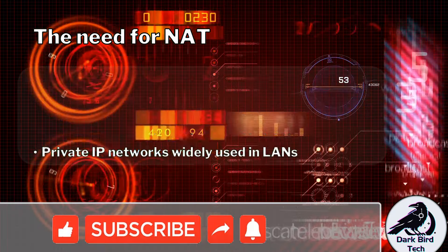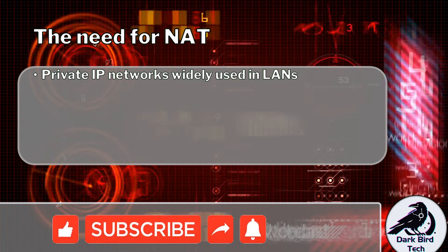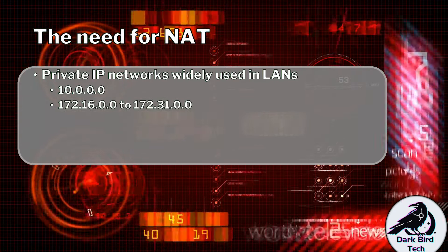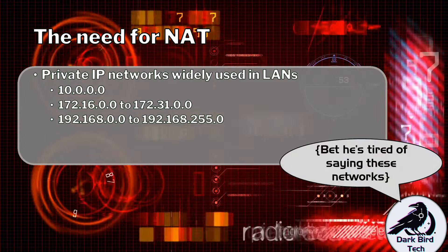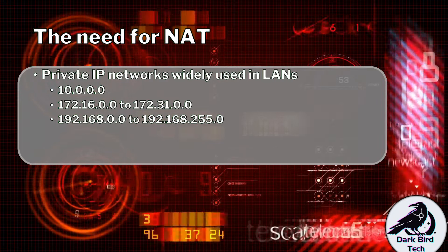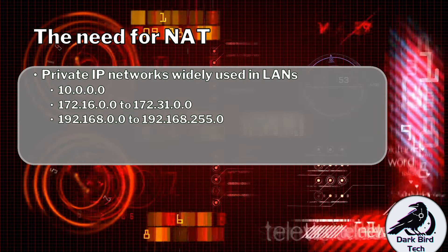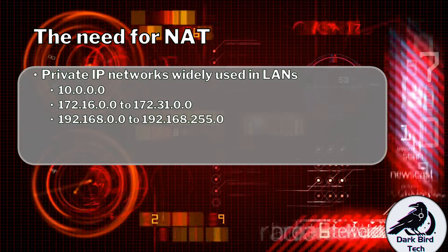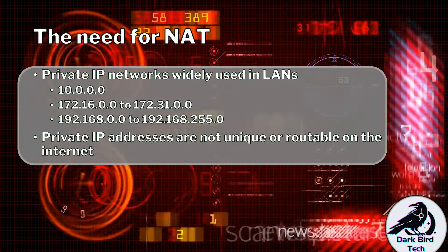The reason why we need NAT is because we tend to use private IP networks in our LANs — networks like the 10 network, the 172.16 through to 172.31, and the 192.168.0 through to 192.168.255 networks. These networks are private, which means anybody and everybody can use them, as we discussed in a previous video on IPv4. The problem with those private addresses is that they're not unique or routable on the internet.